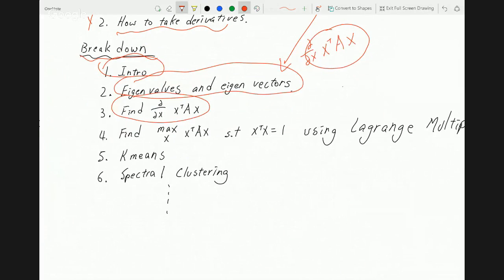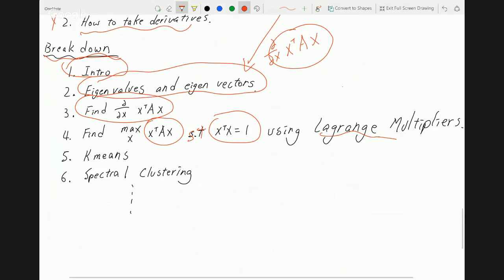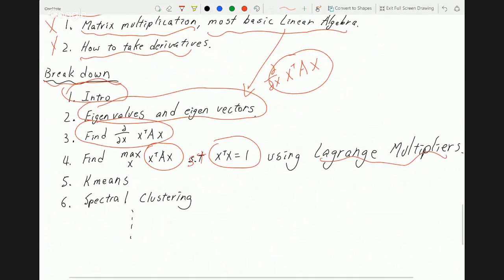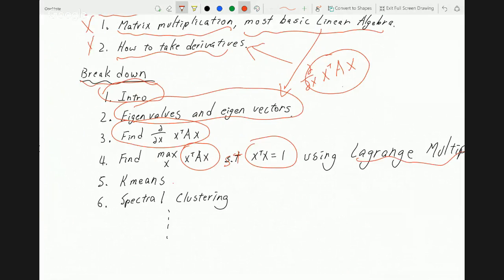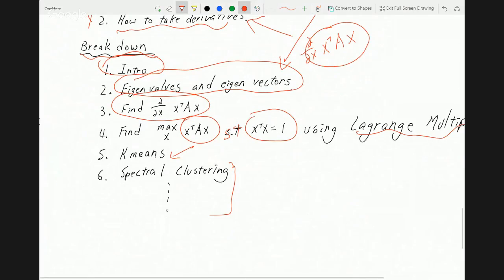Then we want to find how we can maximize this if we subject it to x times x transpose is equal to one. Of course, we can use Lagrange multiplier, which implies you really got to know your derivatives. Then we'll go over some k-means. And finally, the rest of the videos will be spectral clustering. I'm not really sure how many videos we're going to need for spectral clustering, but whatever after 6 should be all spectral clustering.